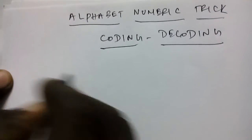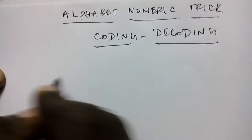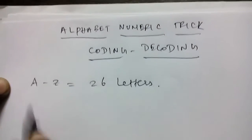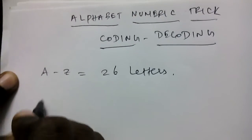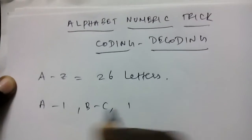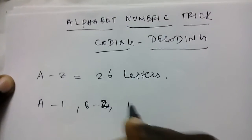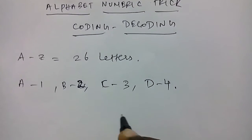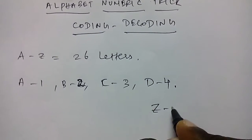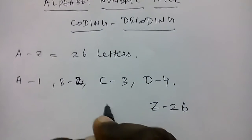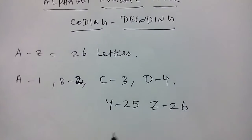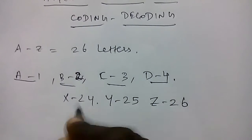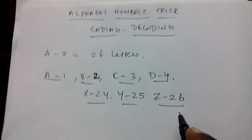We all know the basic number system for alphabets. The English alphabet consists of 26 letters from A to Z. A is 1, B is 2, C is 3, D is 4, and so on — the last alphabet Z is 26, X is 24, Y is 25. These are basics that we can easily remember for examinations.